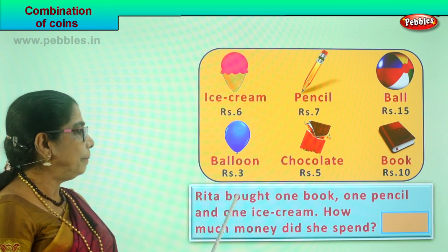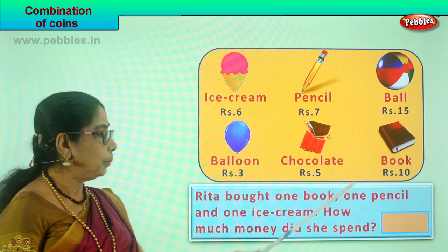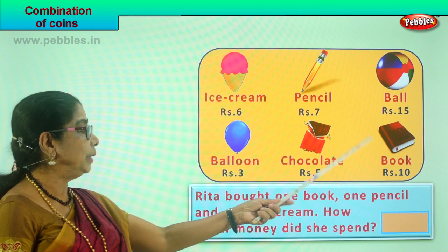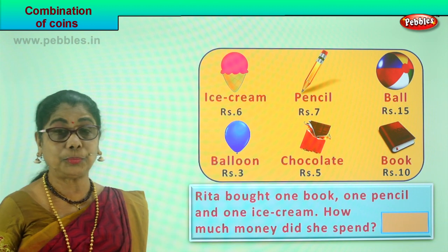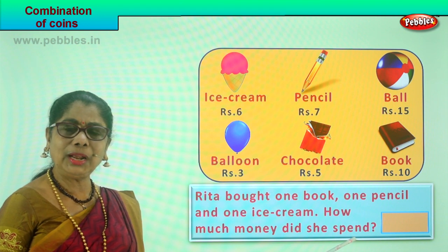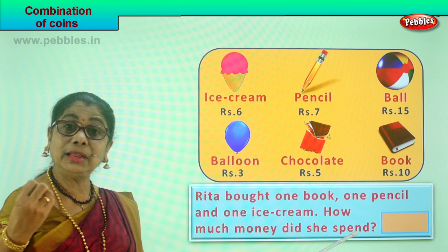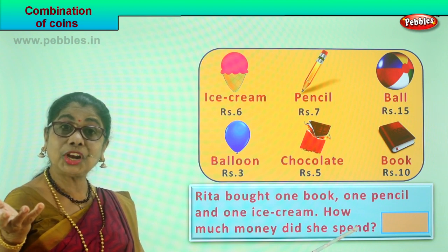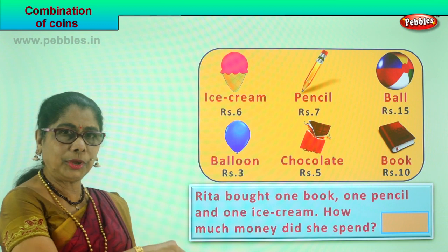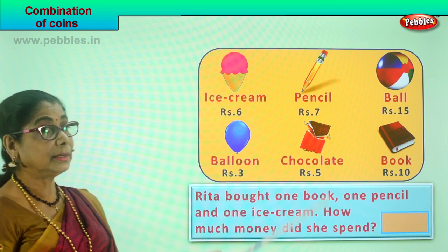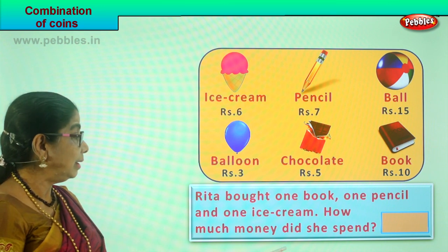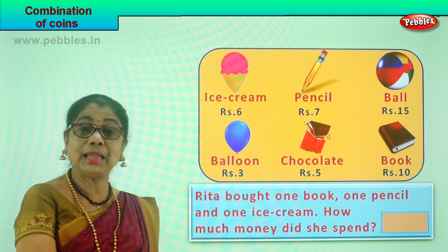Rita says she bought one book for ten rupees, one pencil for seven rupees, and one ice cream for six rupees. The question is: how much money did she spend? What is the total amount? Let's add them all. Book is ten rupees — take a ten rupee coin. A pencil is seven rupees — that is a five rupee coin plus a two rupee coin. Ice cream is six rupees — a five rupee coin plus a one rupee coin.